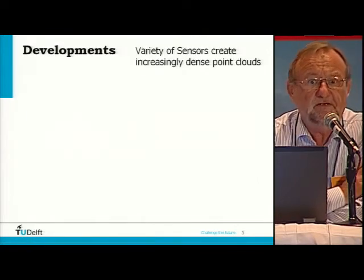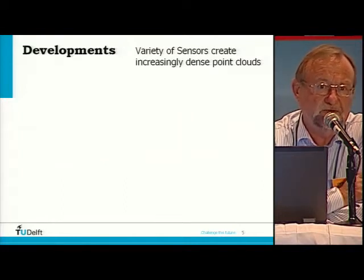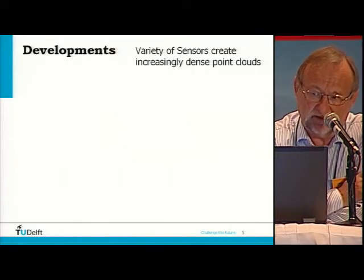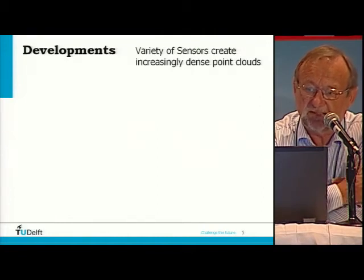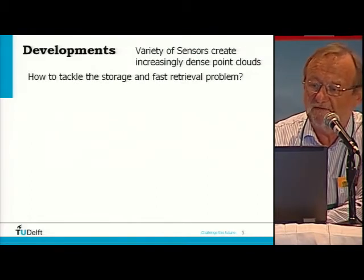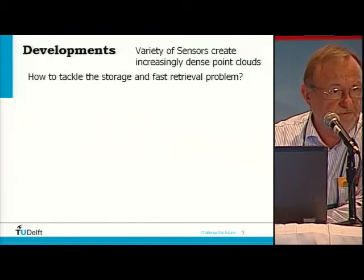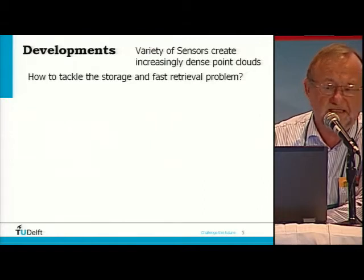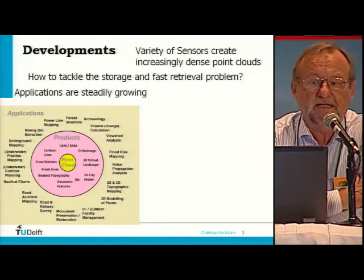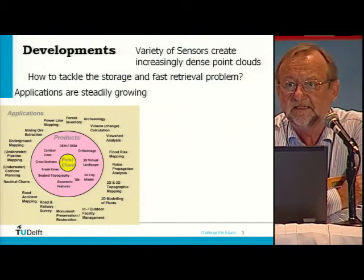Developments. The number of sensors and the types of sensors for which we can create point clouds are increasing. And also within the sensors we see divergence — some sensors are going in one direction or another. Another problem, which we study a lot at Delft University of Technology, is how to store the data in databases so that we can retrieve it in a convenient way and not have it take days or weeks — we need quick retrieval. Another development is applications, and the applications are steadily growing.